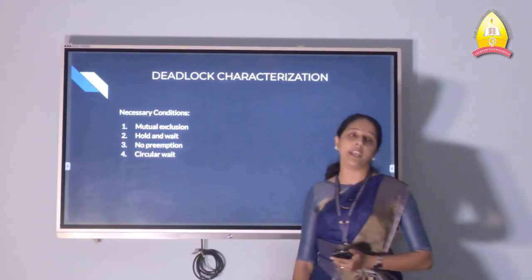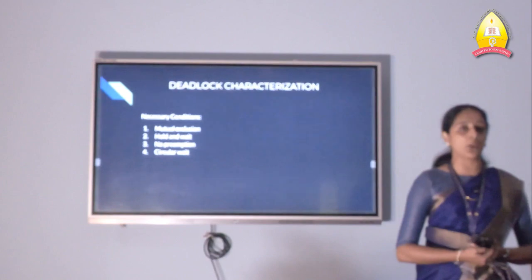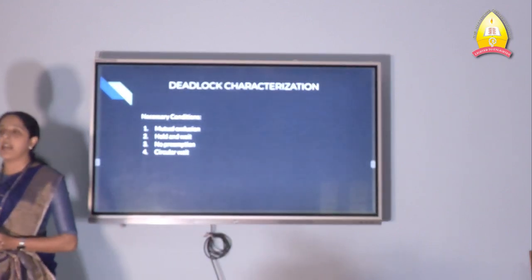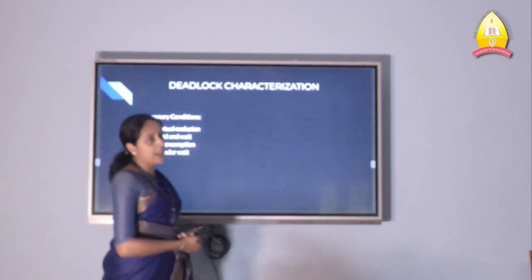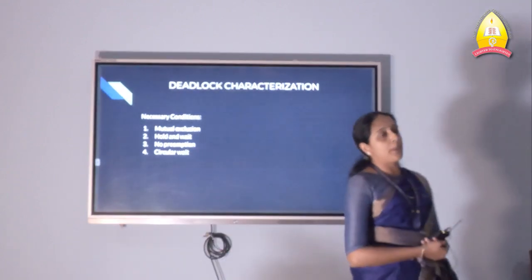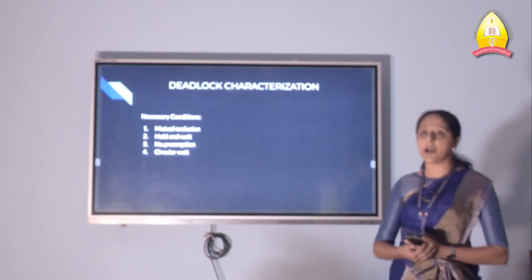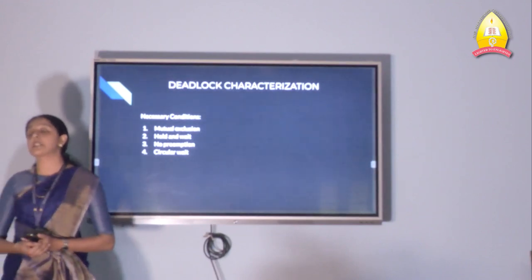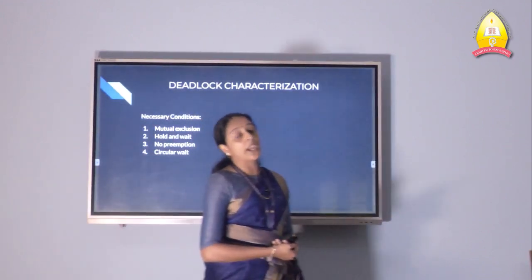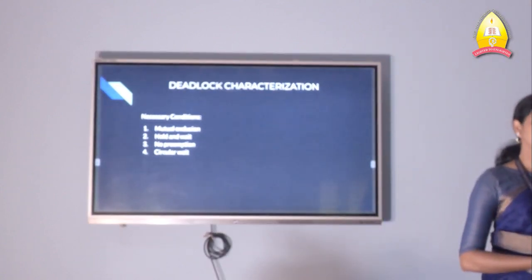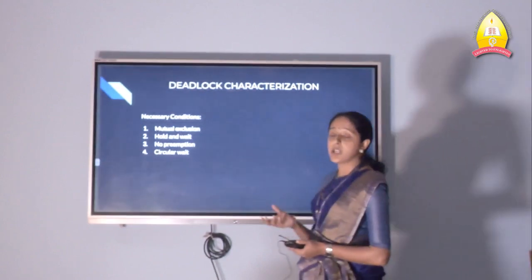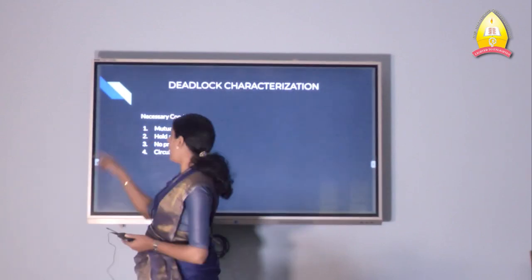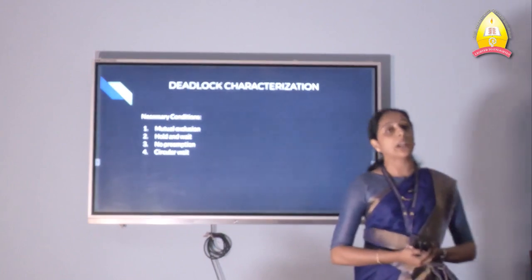The last condition is circular wait. A set of waiting processes P0, P1, P2, ..., Pn must exist such that P0 is waiting for a resource held by P1, P1 is waiting for a resource held by P2, Pn-1 is waiting for a resource held by Pn, and Pn is waiting for a resource held by P0. Here, a set of processes are waiting for each other in a circular form — that is the circular wait condition. When all these conditions occur simultaneously in a system, a deadlock can happen.